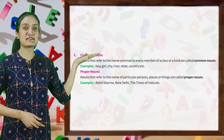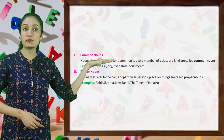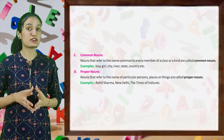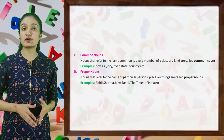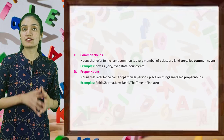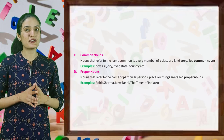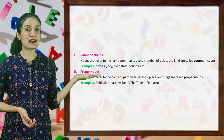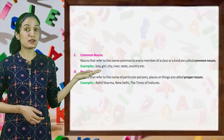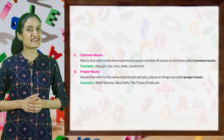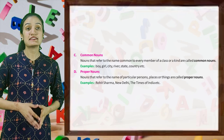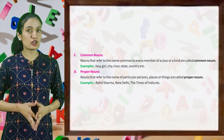Now let's begin proper nouns. Nouns that refer to the name of a particular person, place or thing are called proper nouns. Examples are Rohit Sharma, New Delhi, The Times of India, etc. So kids, I hope you understand.